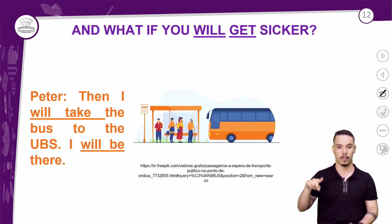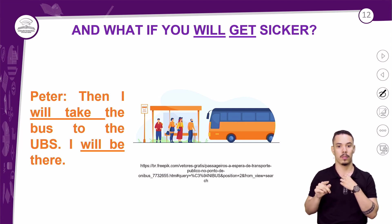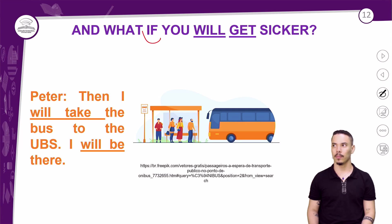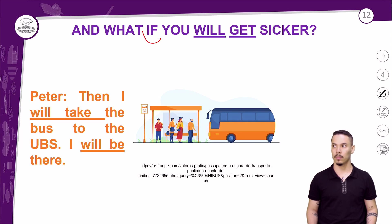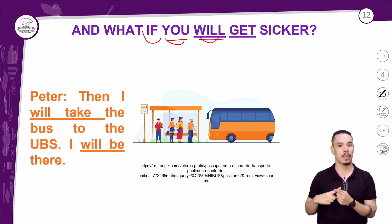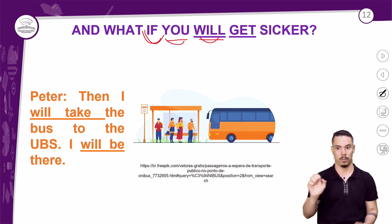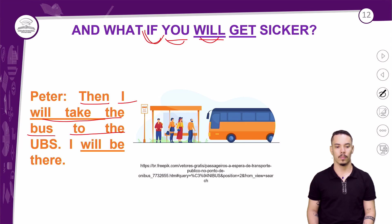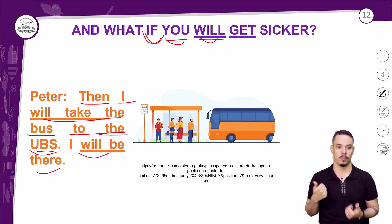Someone asks Peter: 'And what if you get sicker?' — E se você ficar mais doente? This question has a conjunction 'if.' Notice that here 'will' comes after the personal pronoun, not before, because of the 'if' structure. Peter replies: 'Then I will take the bus to the UBS. I will be there' — Então eu pegarei o ônibus para a Unidade Básica de Saúde e eu estarei lá.